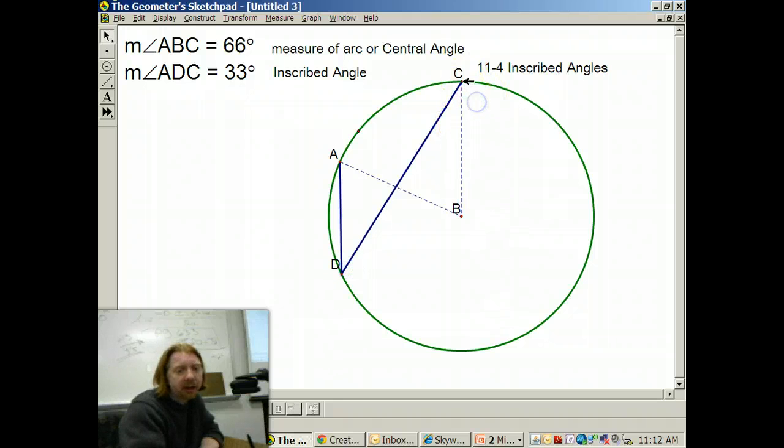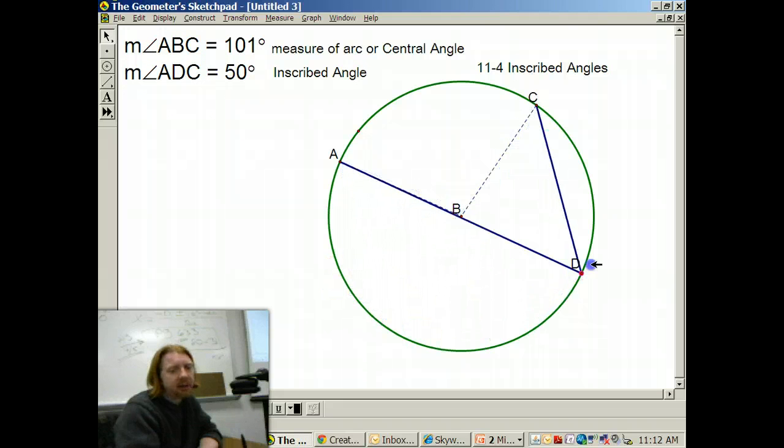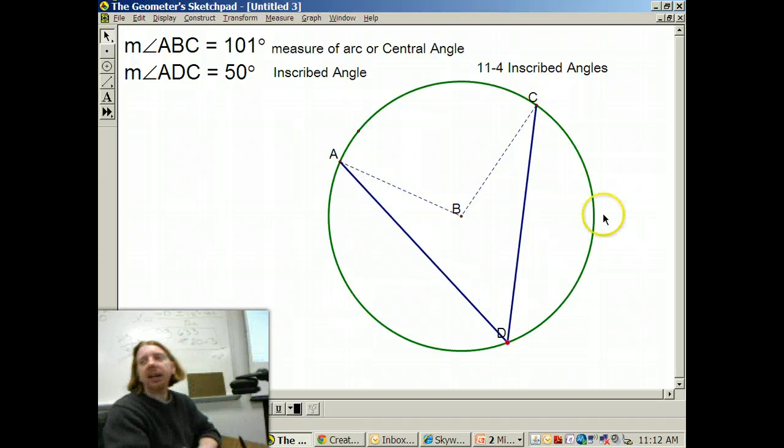In fact, if I change the central angle, let's open it up to a nice, neat, even 100 degrees. ADC changed to 50 and now it's locked in at 50. Wherever I put it. Can you explain what the secant line or whatever it is?